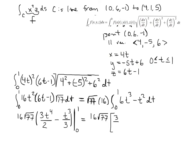So this would be 16 root 77 times. If I plug in 1, I'm going to have 3 halves minus 1 third. A common denominator here is 6. So that would be 9 sixths and 2 sixths. So 9 minus 2 is 7. So that's 16 root 77 times 7 divided by 6. And it looks like I can divide by 2 here. And 7 times 8 gives me 56 root 77 all over 3.